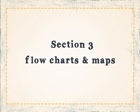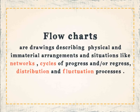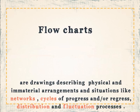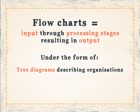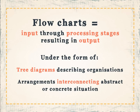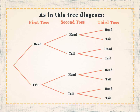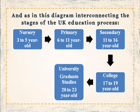Section 3: flow charts and maps. Flow charts are drawings describing physical and immaterial arrangements and situations like networks, cycles of progress and/or regress, distribution, and fluctuation processes. A flow chart equals input through processing stages resulting in output, under the form of tree diagrams describing organizations, arrangements, and interconnecting abstract or concrete situations. In this diagram we see the interconnecting stages of the UK educational process.